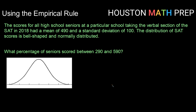What percentage of seniors scored between 290 and 590? We're looking for the phrase 'normally distributed' to know we can use the empirical rule. The best thing we can do is label a normal distribution. With a mean of 490 in the middle, we use a standard deviation of 100 to label up and down by hundreds.